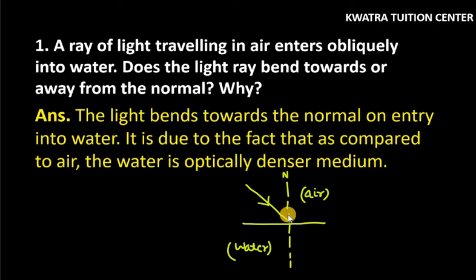This is my normal line. The dotted line. This is the normal. And which direction will bend? Towards normal. So, this is the answer for this.